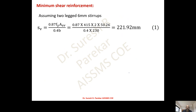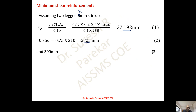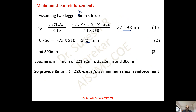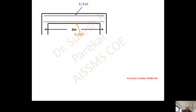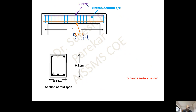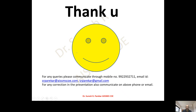Minimum shear reinforcement: provide 8 mm stirrups. Spacing criteria: 221.92 mm, 0.75d = 232.5 mm, 300 mm — minimum is 220 mm. Provide 8 mm-2L stirrups at 220 mm c/c. Final section: main steel at mid-span = 2-20T + 2-16T (tension), anchor bars = 2-12T (compression), shear reinforcement = 8 mm stirrups at 220 mm c/c. This completes the design of the floor beam.